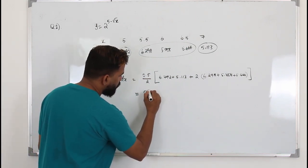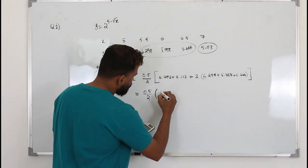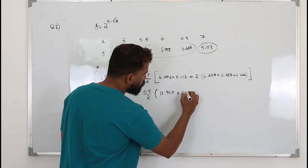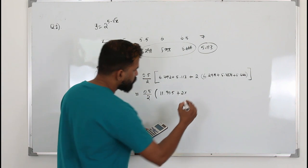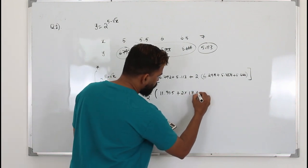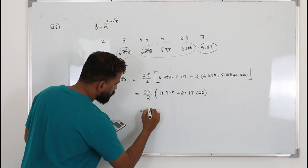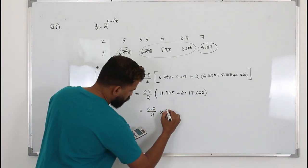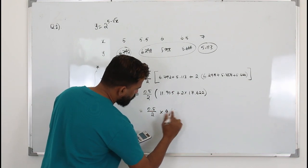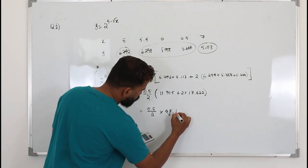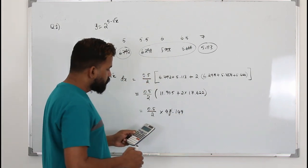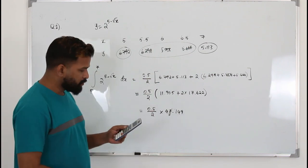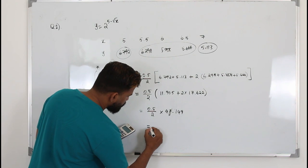So it's 0.5 divided by 2 times 11.905, adding these two, plus 2 times sum of these values, 17.622. So you get 0.5 divided by 2 times 47.149.